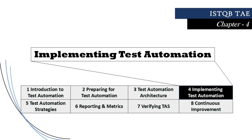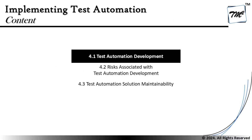Welcome back to another tutorial on ISTQB Test Automation Engineer Certification. We are getting started with Chapter 4 - Implementing the Test Automation. As a part of this tutorial we are stepping into the very first segment, that is 4.1, the Test Automation Development, and here we will be trying to understand how exactly pilot projects can be executed as a part of test automation development.